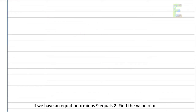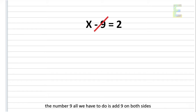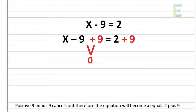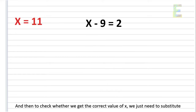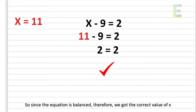For another example, if we have an equation x minus 9 equals 2, find the value of x. We need to put the unknown variable all by itself on one side. To get rid of the number 9, we add 9 on both sides. The equation becomes x minus 9 plus 9 equals 2 plus 9. Positive 9 minus 9 cancels out because 9 minus 9 is 0. Therefore, x equals 2 plus 9, so the value of x is 11. To check, we substitute: 11 minus 9 equals 2. Since the equation is balanced, we got the correct value of x.